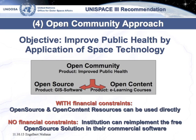The main objective, according to the UN's Unispace 3 recommendations, is to improve public health by application of space technology — with emphasis on improved public health, not on maximizing the use of a certain piece of technology. The product of an open community of practice is improved public health. It has two pillars: open source, where the product is a GIS software for example, and open content, where the product is e-learning courses or Wikipedia content. There is a priority on using open source and open content resources because they can be used directly without financial constraints.